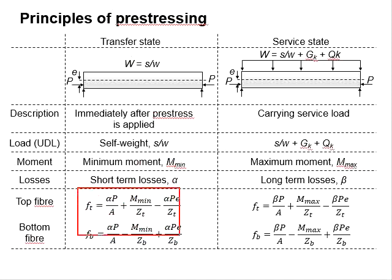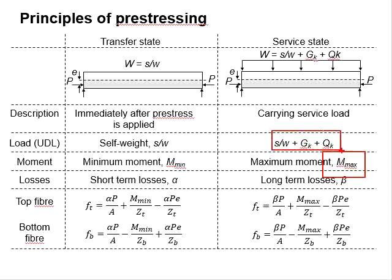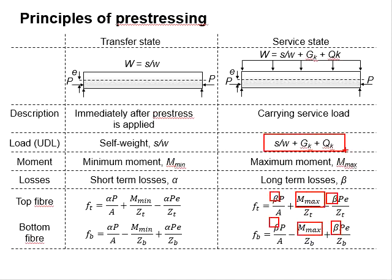This gives two expressions for the top and bottom of the beam. Alpha refers to the short-term losses and M-min refers to the moment due to self-weight. As for the service stage, it represents the beam while carrying service load. This is when GK and QK are considered, and the moment caused by these loads is considered a maximum moment. The losses at the service stage are the long-term losses, represented by beta, giving two further expressions where M-max refers to the moment due to self-weight, GK, and QK.